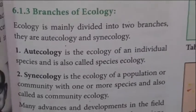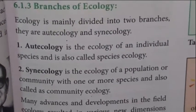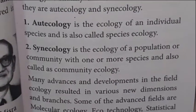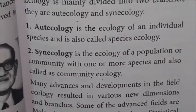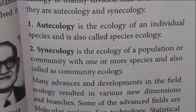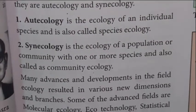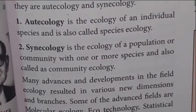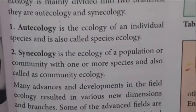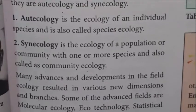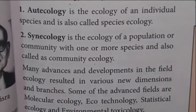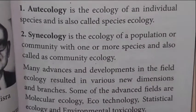Ecology is mainly divided into two branches: autecology and synecology. Autecology is the study of an individual species and is also called species ecology. It deals with the ecology of a single species.